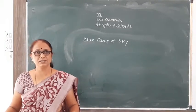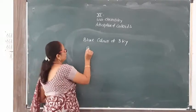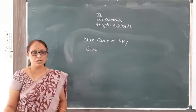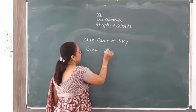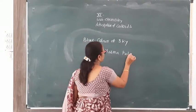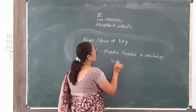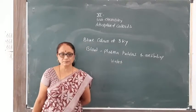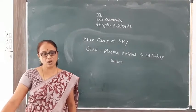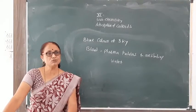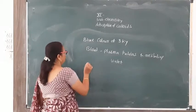Due to the colloidal particles there is scattering of blue light and the color of the sky becomes blue. Blood is also an example of a colloid. It is a colloidal dispersion of plasma proteins and antibodies in water — plasma proteins and antibodies are the dispersed phase, and water is the dispersion medium.